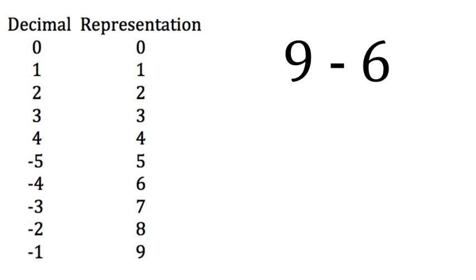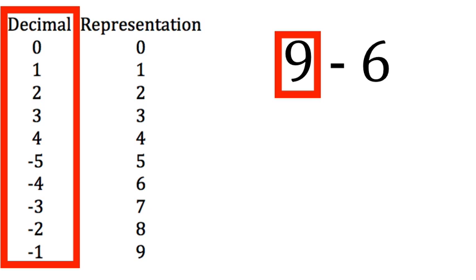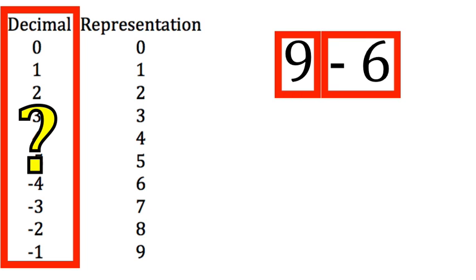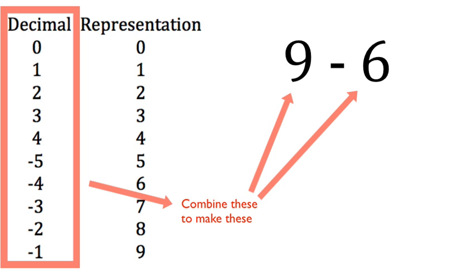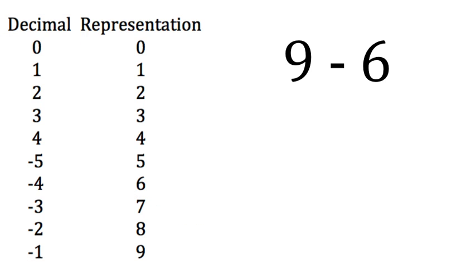But what about 9 minus 6? Well, if we look up 9 in the decimal, it's not in the table, and neither is minus 6. It only stops at minus 5. So what can we do? Well, we can use combinations of numbers that are already in the table and then use those and add them all up to do our sums.